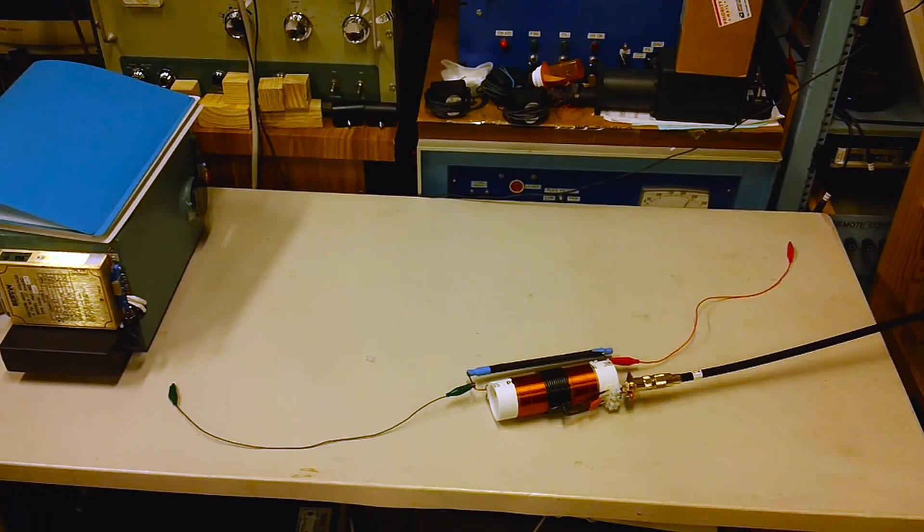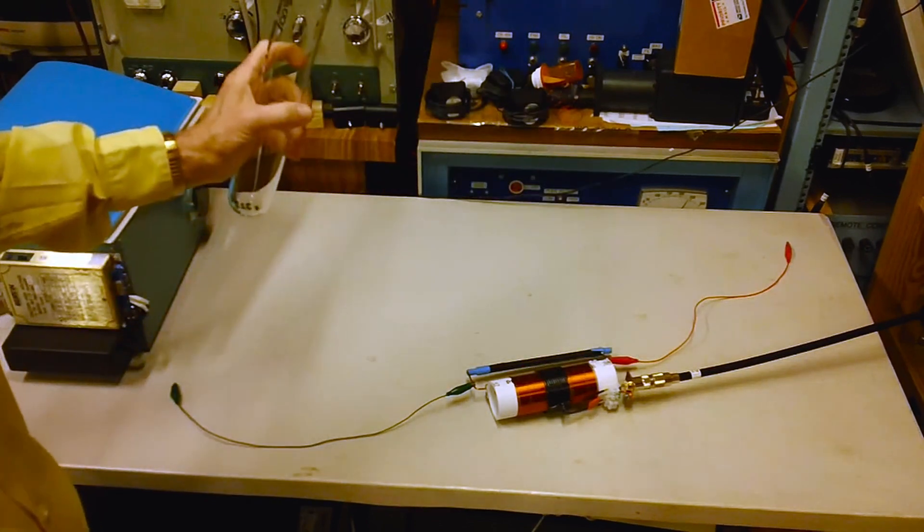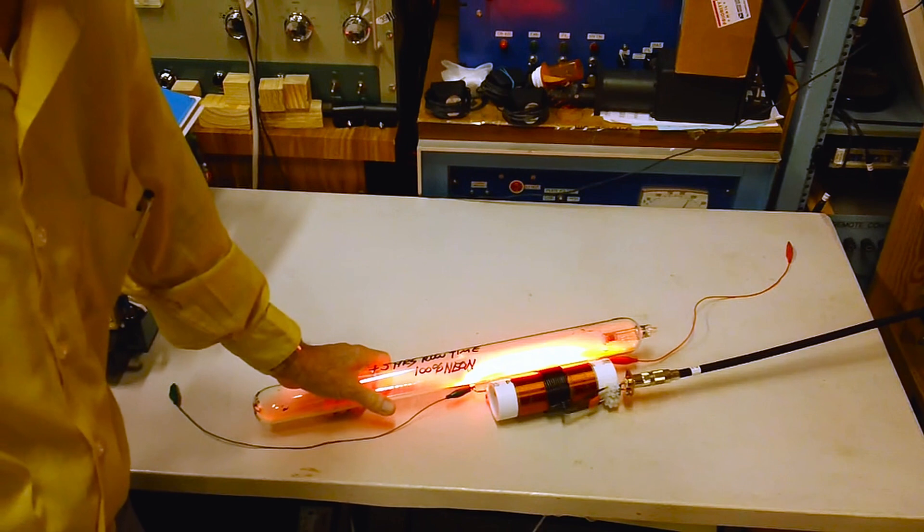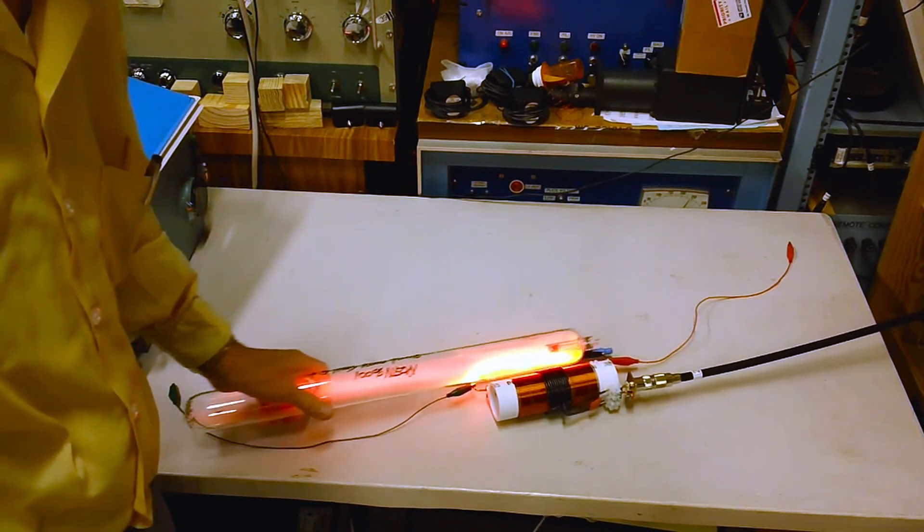If we replace the fluorescent tube with the SSQ-ST plasma tube, which you see here, and place it near the coupler, if the tube is good, it will light. This indicates that the tube is good and working.